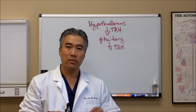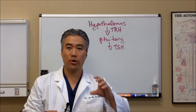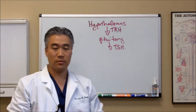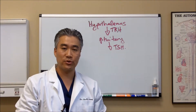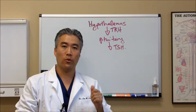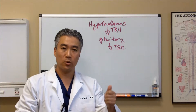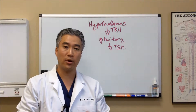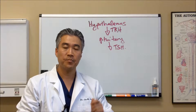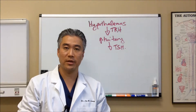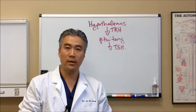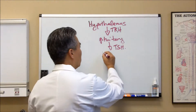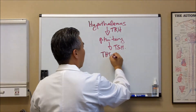When we talk about thyroid, we're actually just talking about the brain first. The hypothalamus produces a hormone called thyroid-releasing hormone, which goes down to the pituitary gland — also another part of the brain — and releases thyroid-stimulating hormone, which then goes to the thyroid.